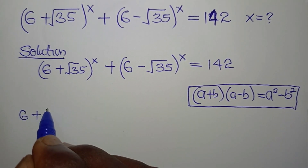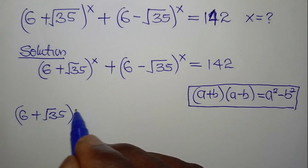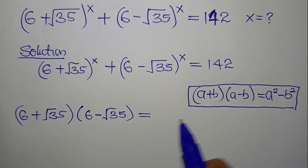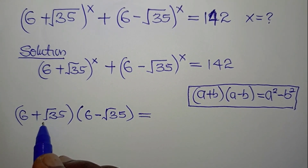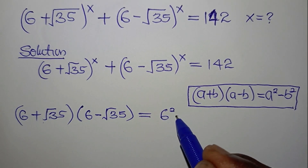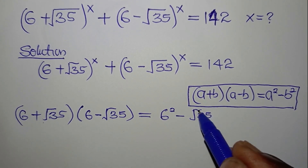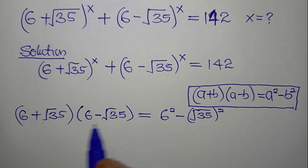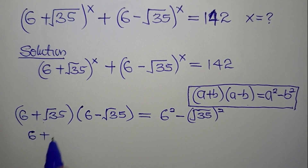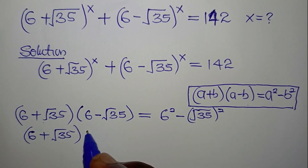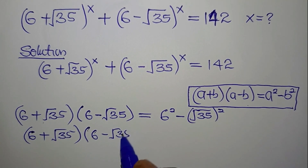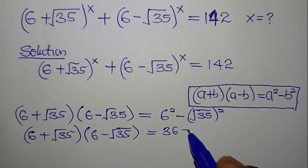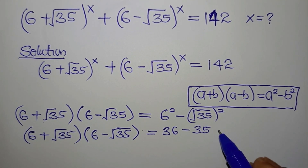We can write (6 + √35) multiplied by (6 - √35), and this equals 6² - (√35)², which gives us 36 - 35. The whole expression is therefore equal to 1.